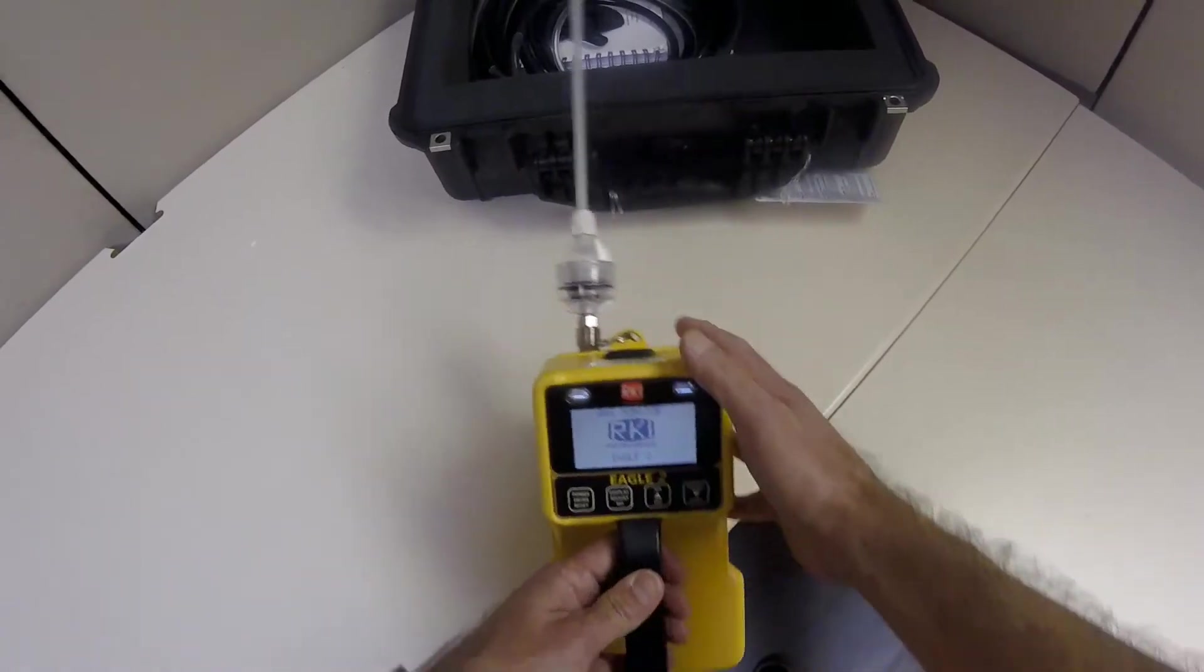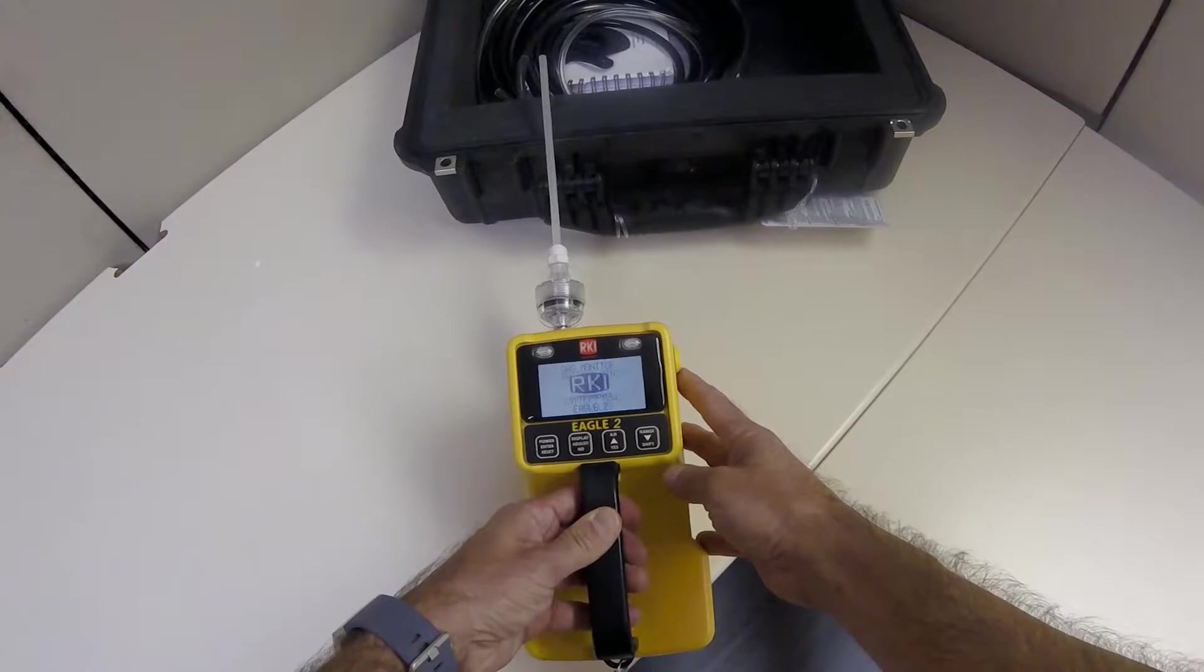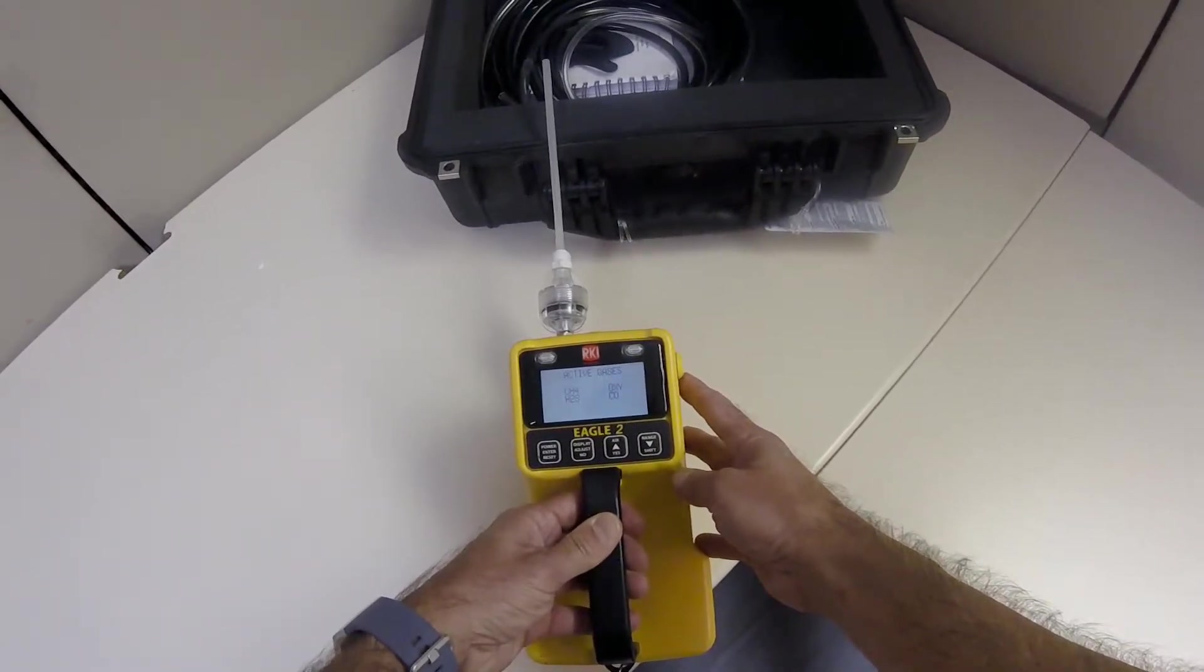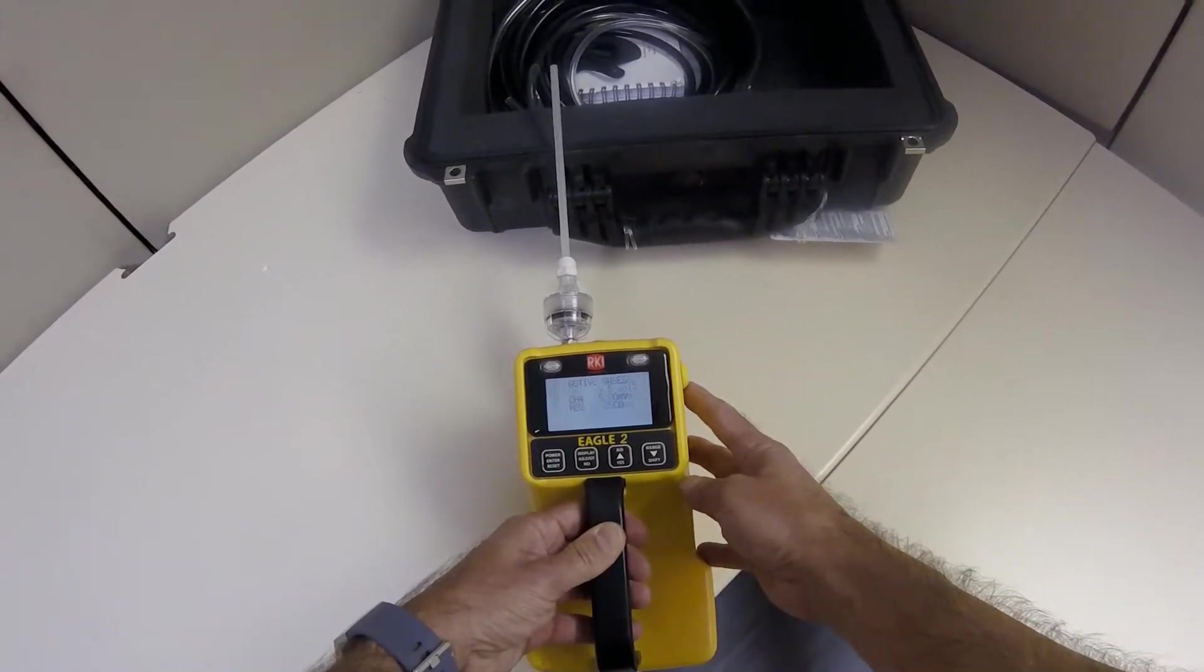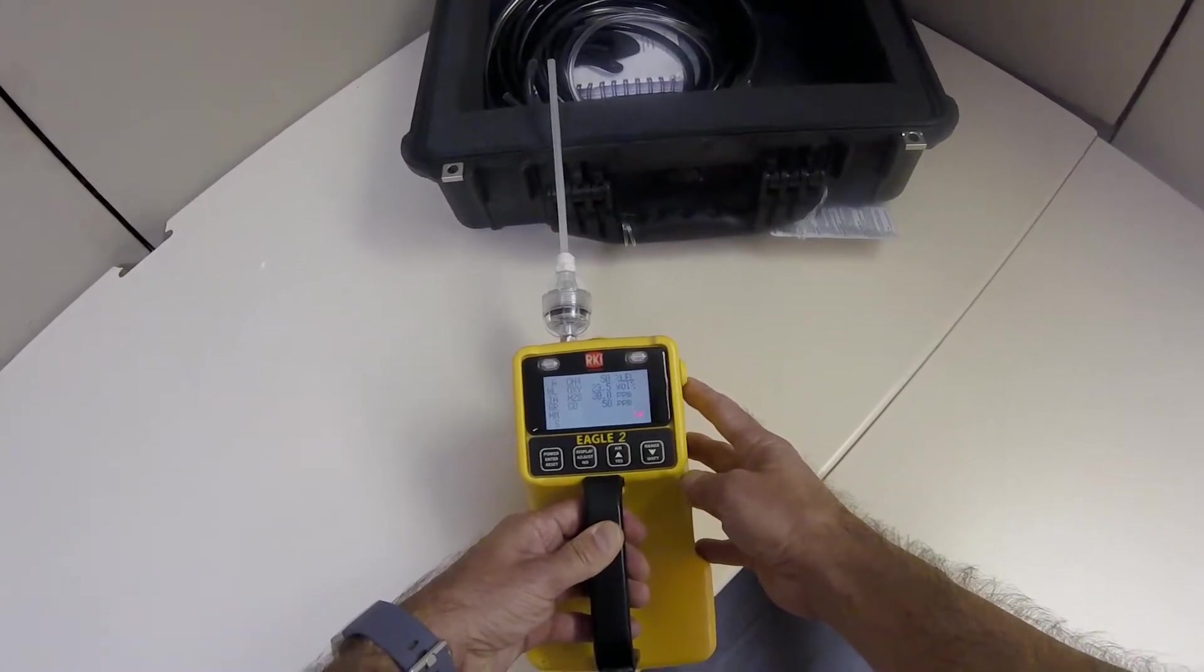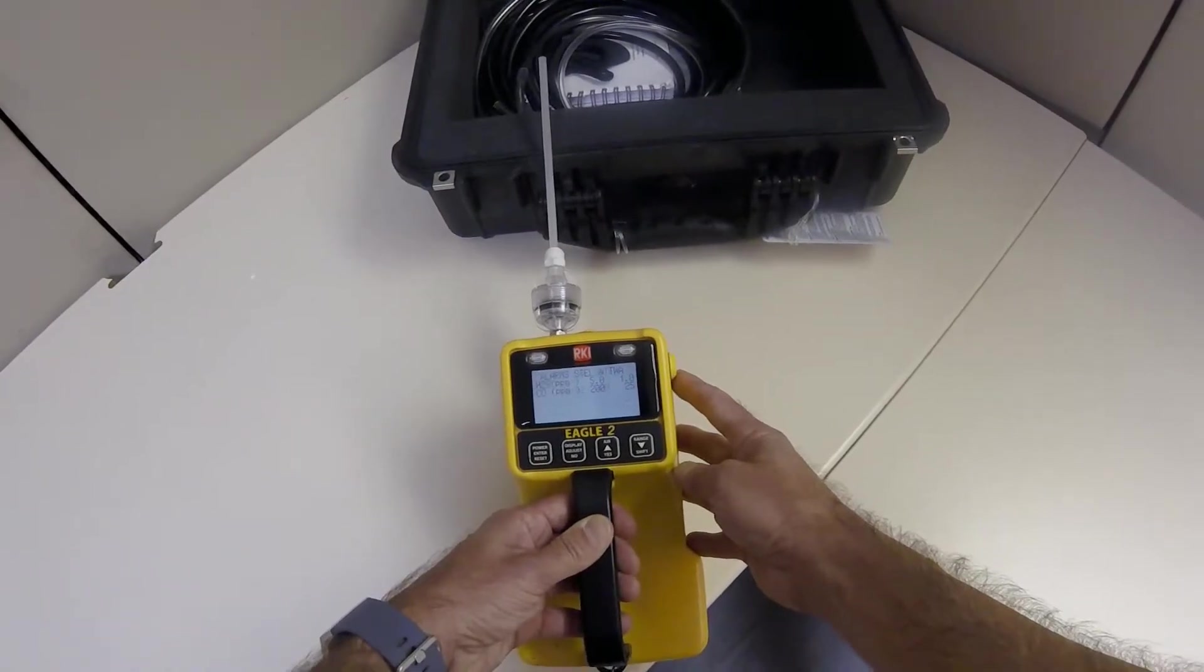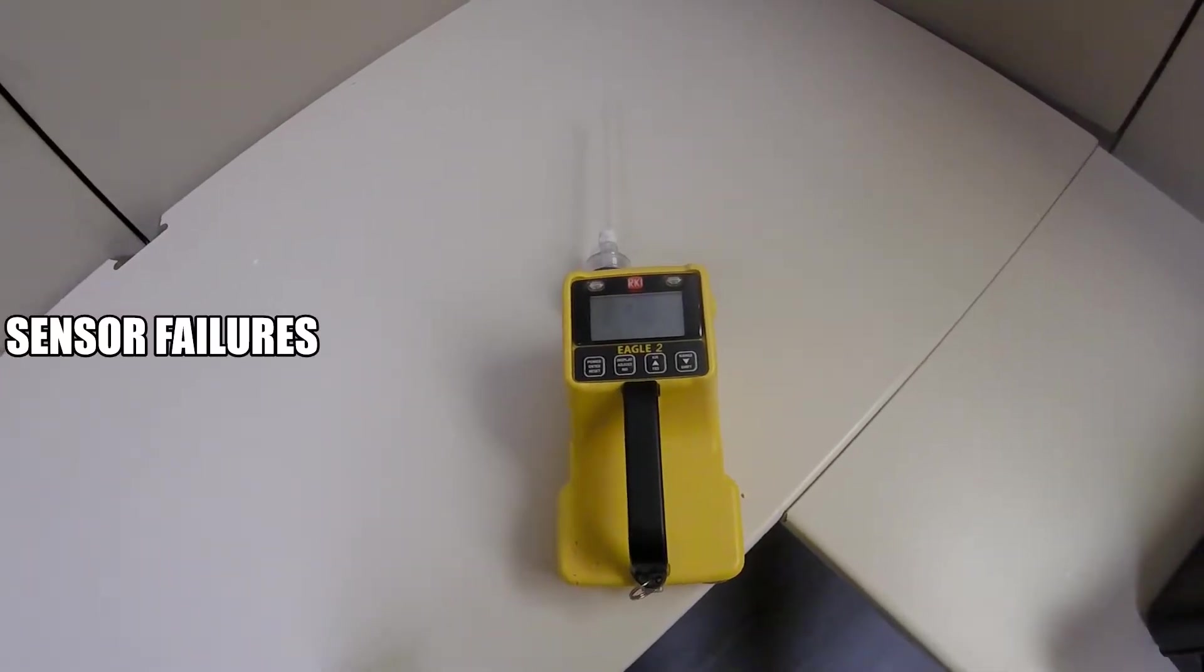The instrument will now go through its warm up sequence and begin to show you screens for battery voltage, active gases, lunch break if lunch break is turned on, low alarm, high alarm, STEL, TWA, calibration reminder if cal reminder is turned on, date and time, user ID, station ID, serial number, and sensor failures. After this warm up, it will go into measuring mode.